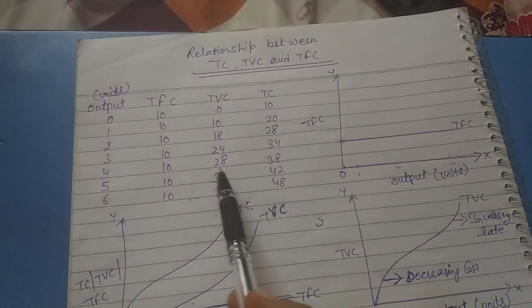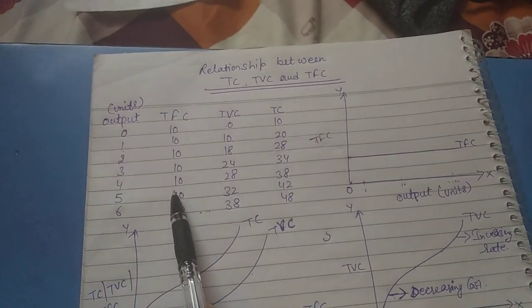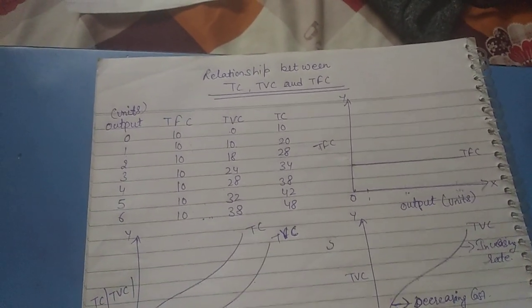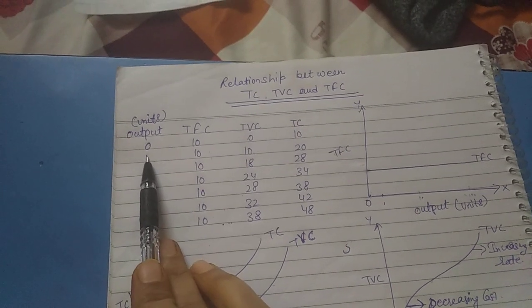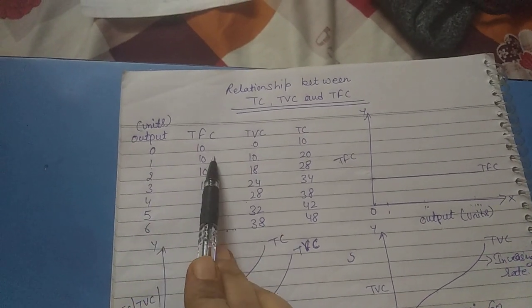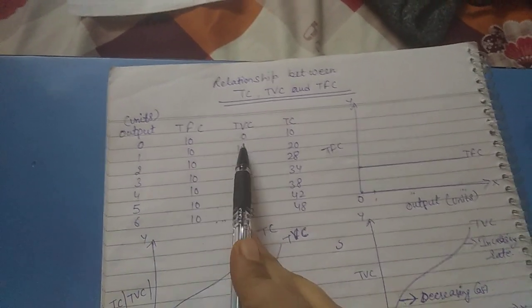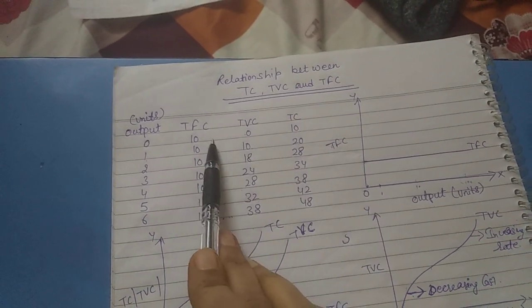First, you need to understand the schedule. The first column is output, the second one is TFC, then TVC and TC.